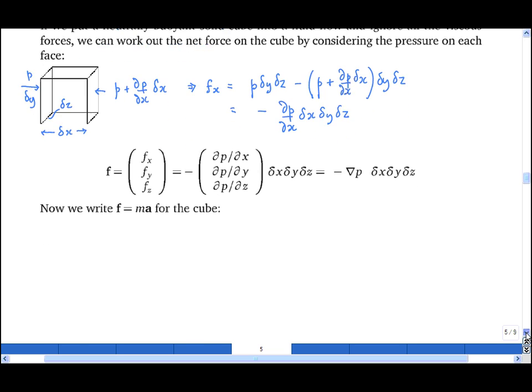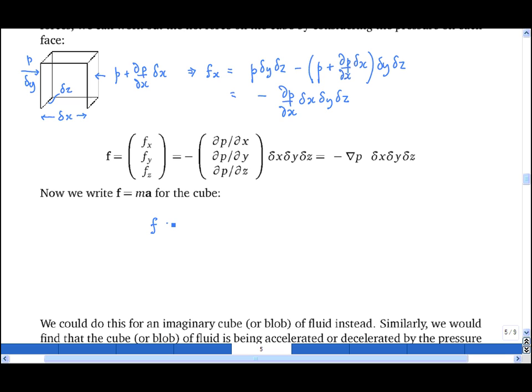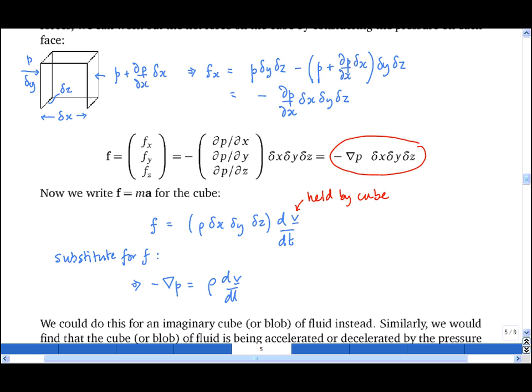Now let's write f equals ma for this cube. We'll get that f, the force, is equal to rho delta x delta y delta z, where rho is the density and delta x delta y delta z is the volume. The acceleration of the cube is dv by dt, and this velocity here is held by the cube. Now we substitute in this expression for f, and we get that minus grad p is equal to rho ordinary dv by dt, where that v is the velocity held by the cube.